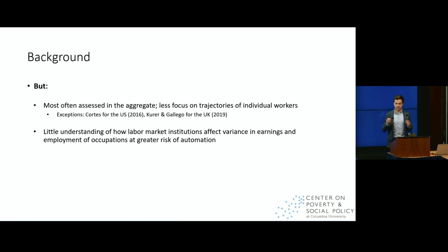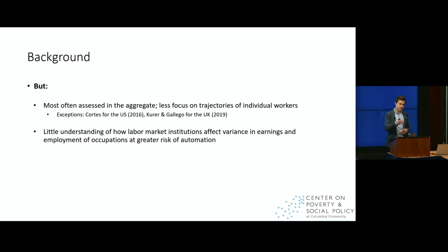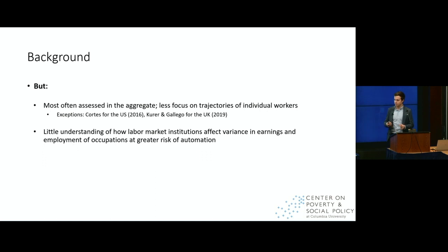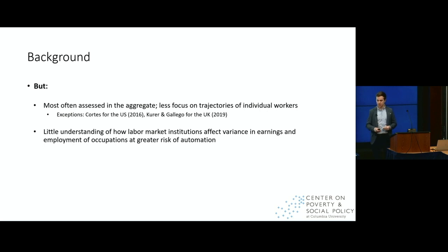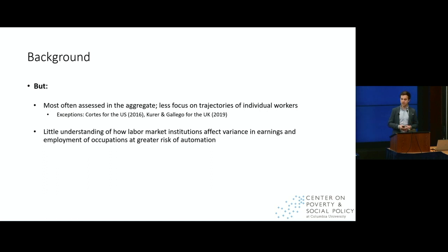What I'm going to focus on is that so often when we assess the consequences of technological change, we do so from a very macro-level perspective, looking at changes in the aggregate to see how employment shares of certain types of occupations change over time — but perhaps not enough focus on the experiences of individual workers. If you are in a routine job and your job is made redundant due to technological change, what does it mean? To what types of occupations are you moving? Are you more likely to live in poverty? Are you sent to unemployment? And using panel data, we can try to answer some of those questions.